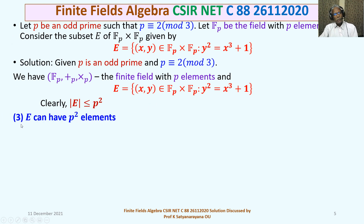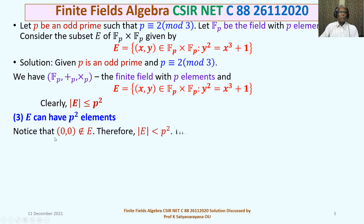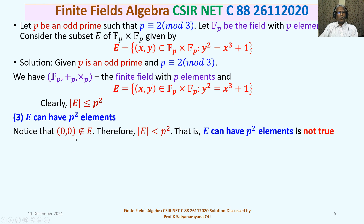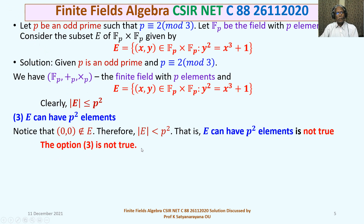Now let us discuss Option 3: E can have P² elements. Notice that (0, 0) does not belong to E. If you substitute x = 0 and y = 0 into y² = x³ + 1, the equation gives 0 = 1, which is not satisfied. Therefore (0, 0) ∉ E, which means the order of E is strictly less than P². So the statement that E can have P² elements is not true. Therefore Option 3 is false.